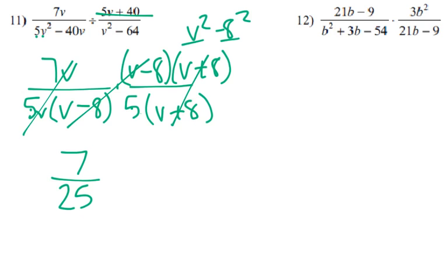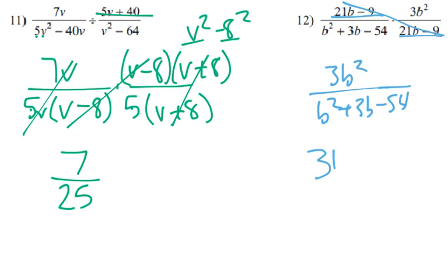So some of these can simplify pretty far down. Number 12. So 21b minus 9. We don't need to factor those out. We can eliminate those right off the bat. Then we get 3b² over b² plus 3b minus 54, which we can try to simplify that bottom one into factors, but it's really not going to make a difference because it would be, let's see, factors of negative 54 that add up to positive 3, 9 and 6. So it would be b plus 9 times b minus 6, which that doesn't do anything for us, so you don't need to do that. You can, but you don't have to.